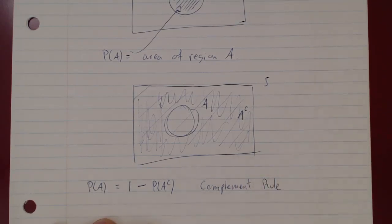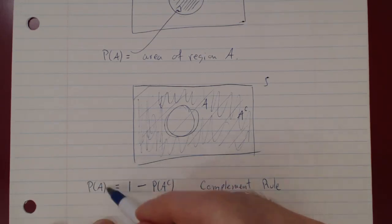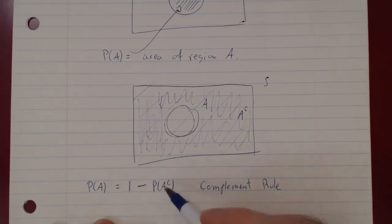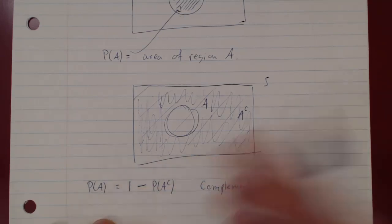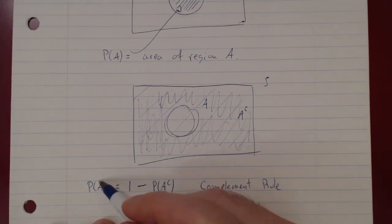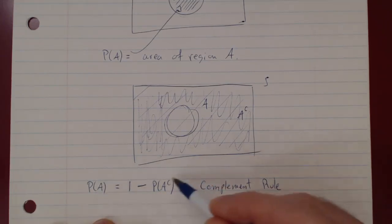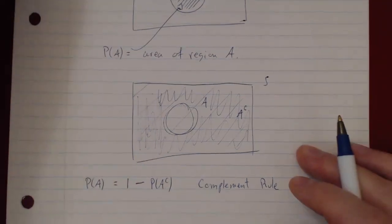Why is this useful? It is useful because if you cannot find P(A) directly — if the event A is too complicated — its complement will be much simpler. That's the duality. If you can find P(A) directly, go ahead. If A is very complicated, use the complement rule, because the more complicated A is, the simpler A complement will be.